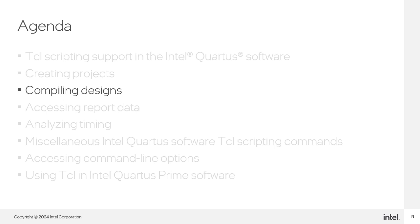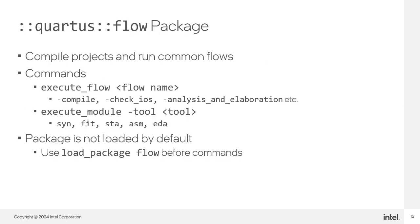Now that we've talked about how to use Tickle to create projects and make assignments, let's talk about how to compile designs. The flow package includes commands to compile designs and run common flows. A flow runs a series of executables with various predefined options to perform common processing tasks. Compiling a design is a flow, as is performing IO assignment analysis. Most items listed in the processing menu of the Intel Quartus Prime Software GUI have corresponding flow or module names you can run in Tickle.